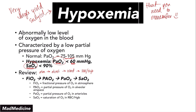There are specific values we use to quantify how much oxygen is in each step of this pathway. FiO2 is at the atmosphere level. PAO2 is at the alveolar level. PaO2 is at the arteriole or bloodstream level. And SAO2 is the saturation of oxygen in our red blood cells — the oxygen saturation.